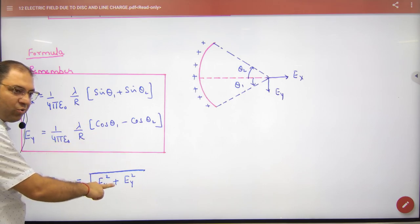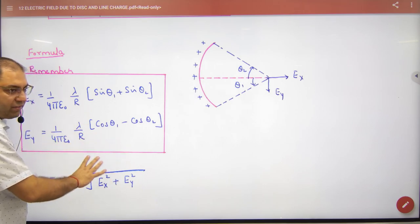So what is net E? Under root of E square plus E square. So note this with this diagram.